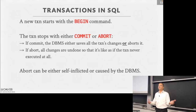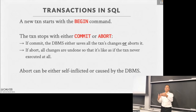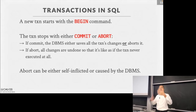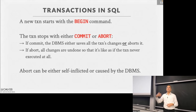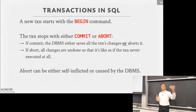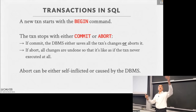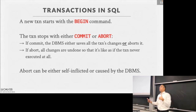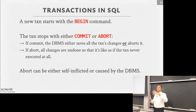How does the database system know a transaction has started and ended? In SQL, you can explicitly put a BEGIN TRANSACTION and END TRANSACTION to tell the system that everything in between is a transaction, which could include multiple SQL queries. If you don't have a BEGIN and END, the database implicitly wraps each query. A transaction could be multi-query — you can explicitly put BEGIN and END.